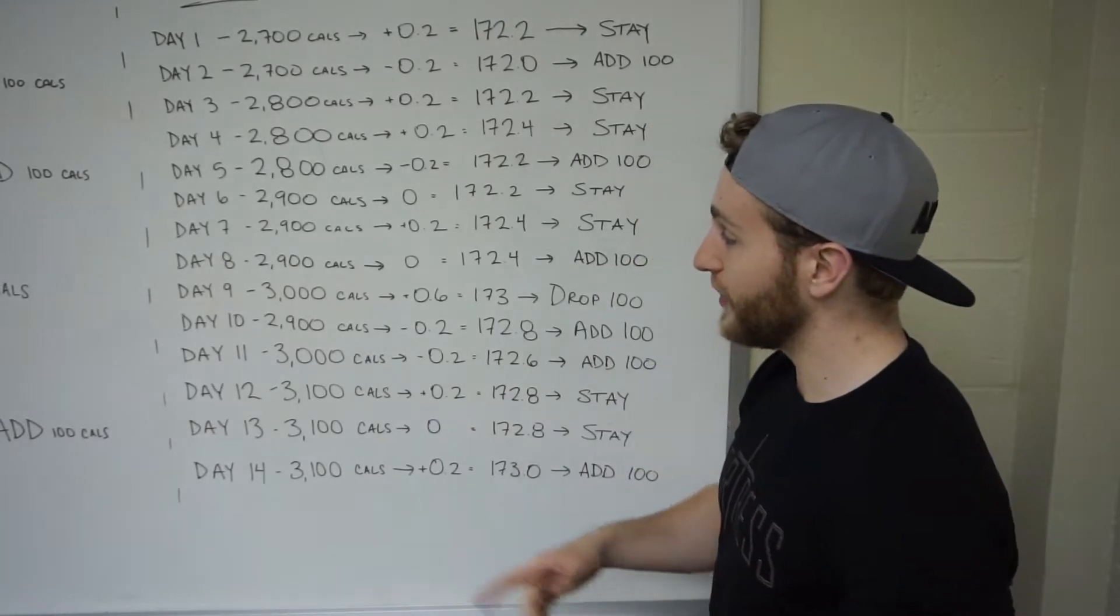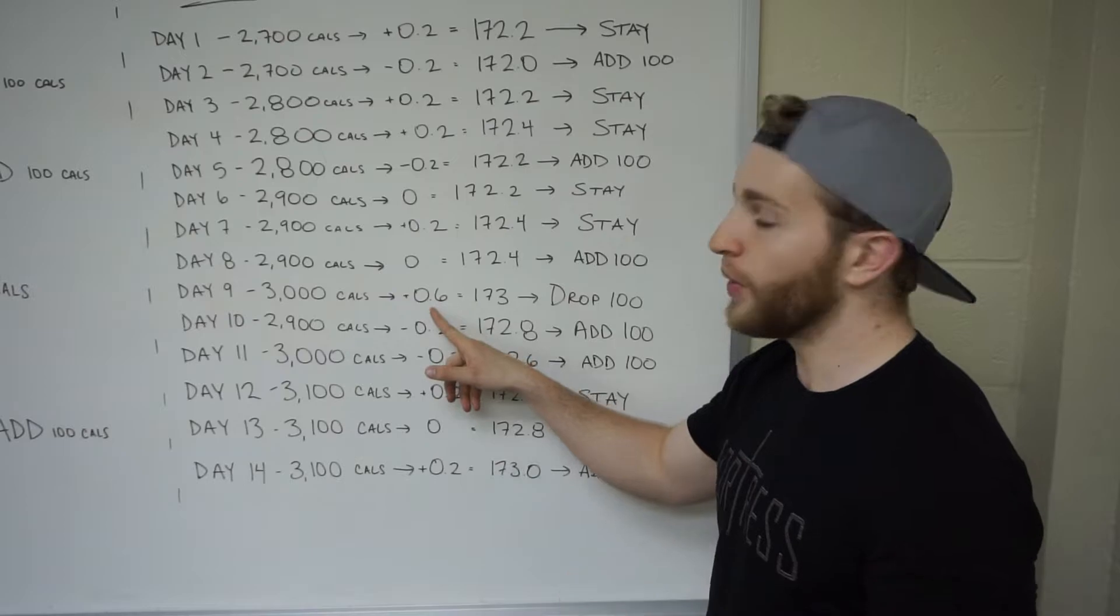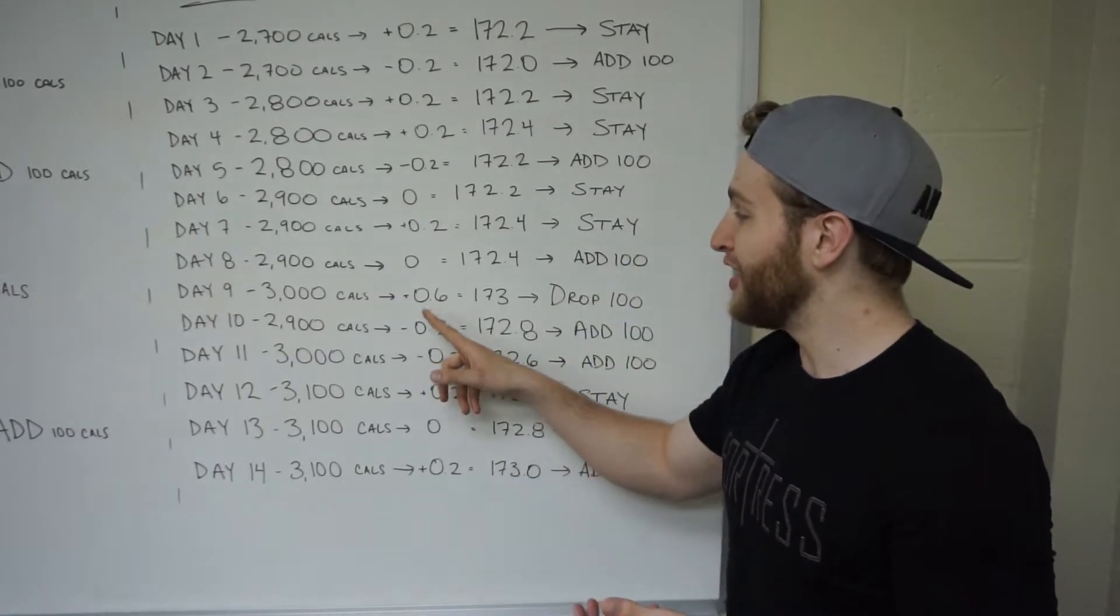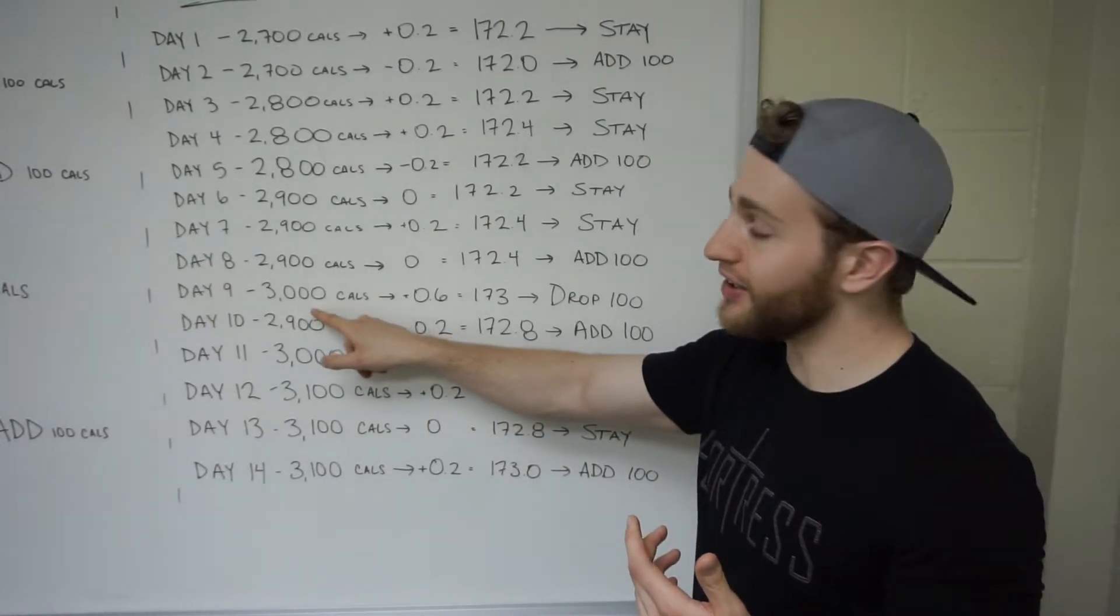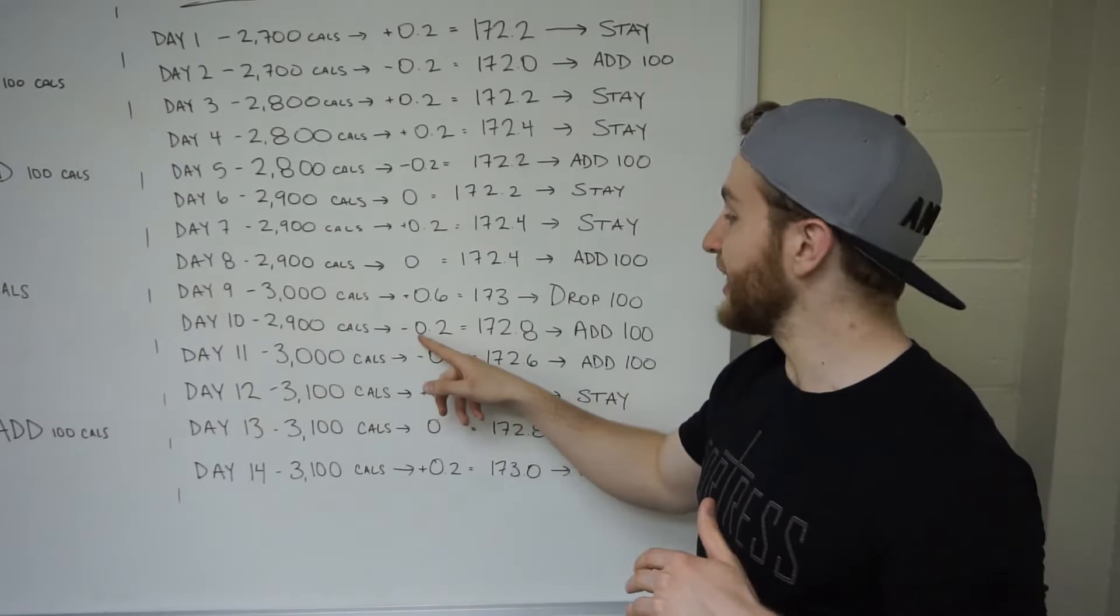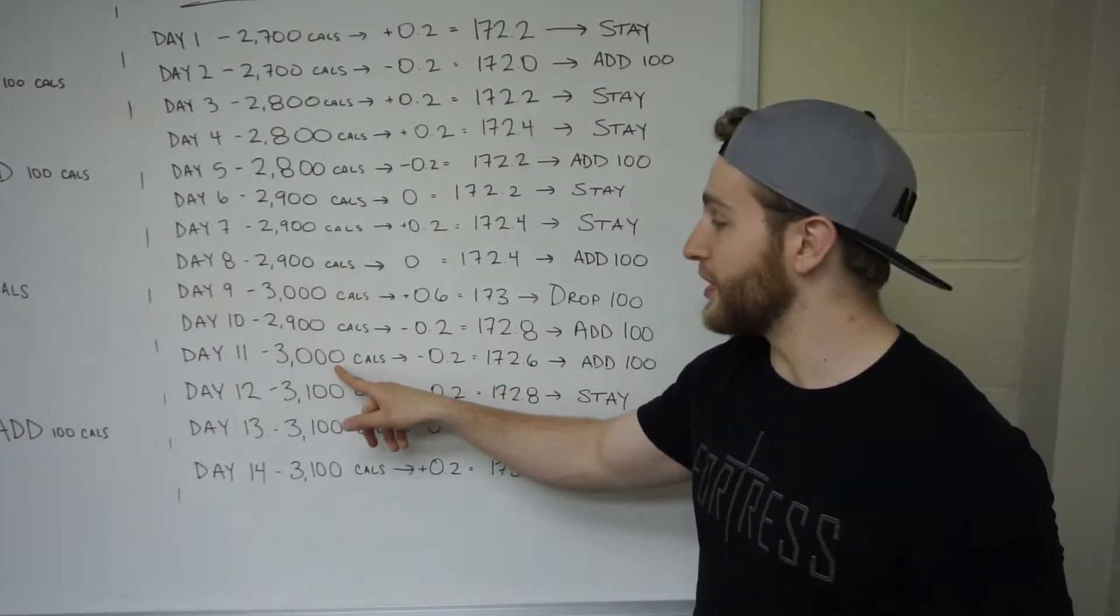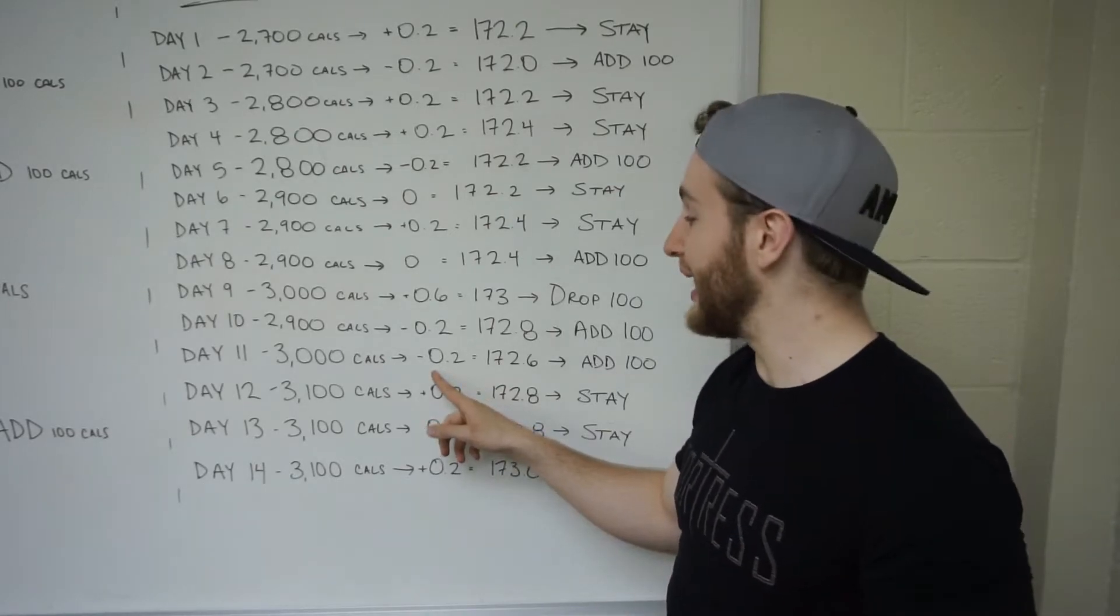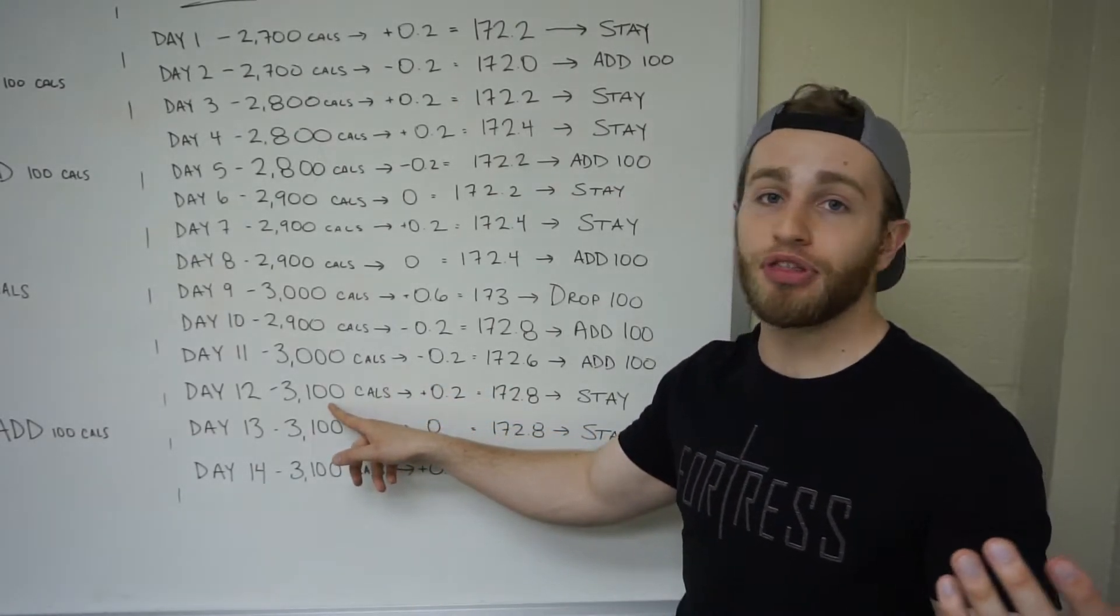For example, it's never going to go perfect. Say on day nine once you bump your calories up to 3,000, it fluctuates up a little bit, you gain 0.6 pounds. That probably means your body is not ready for the 3,000 calories. On day 10 we're going to drop it back down to 2,900. Day 11 you weigh in just a little bit lighter. You can bump it back up to 3,000.